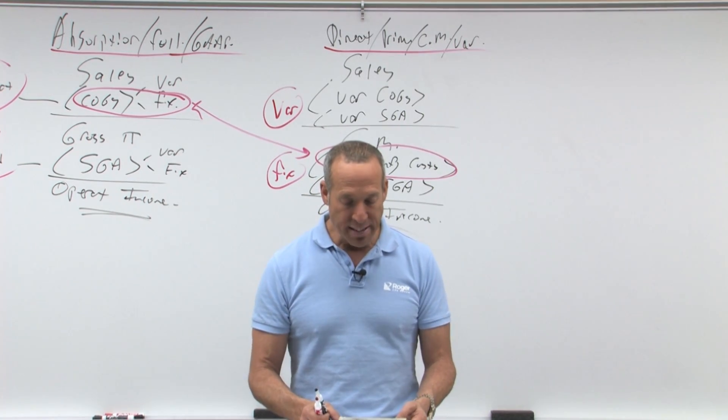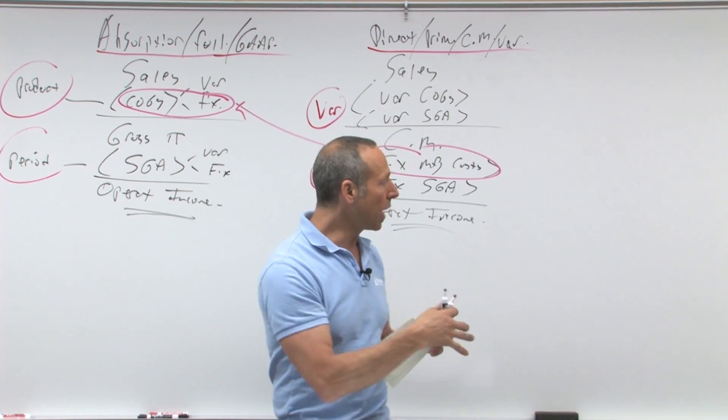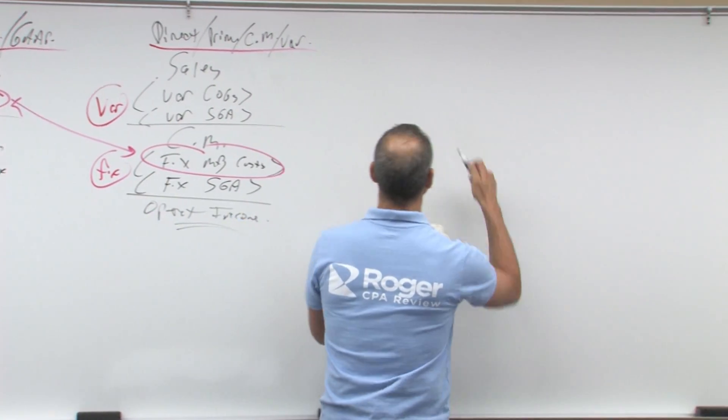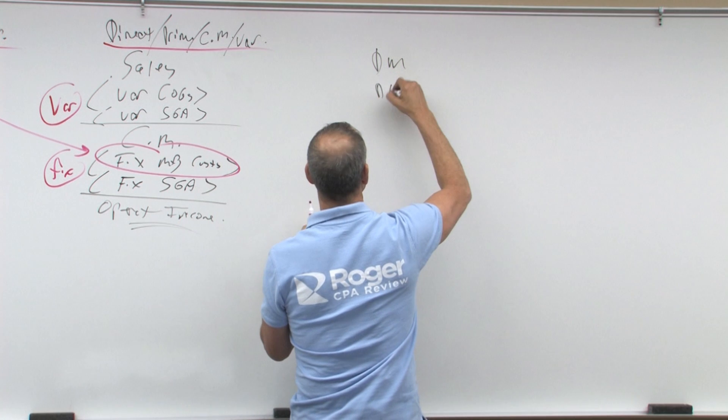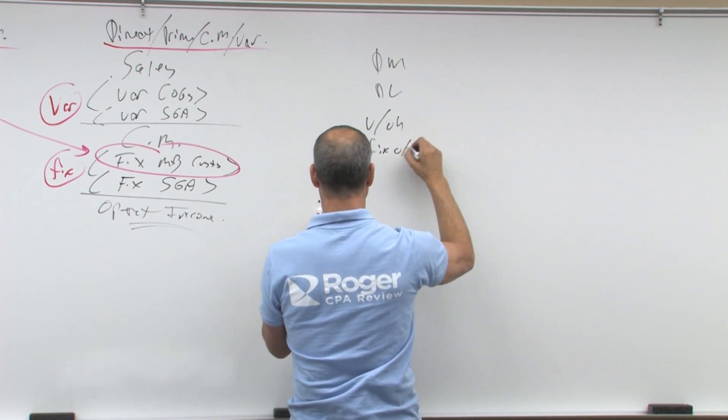So, let us pretend that I've got some numbers, and I'll put them on this side. Let's say over here I've got direct materials, direct labor, variable overhead, fixed overhead.